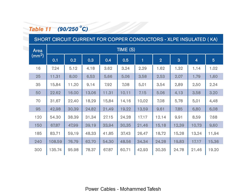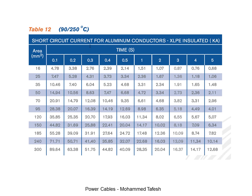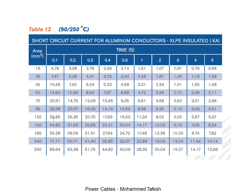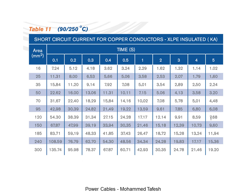In other words, at the beginning of the short circuit the value increases, but after many seconds the value decreases. Looking at aluminum conductors, the value differs from copper conductors. If we choose the same cross section area of 120 mm squared, we note that the value decreases — at 0.1 seconds it is 35 kilo-amperes, and at 5 seconds it is 5 kilo-amperes, while for copper conductors at this cross section area it is 7 kilo-amperes.